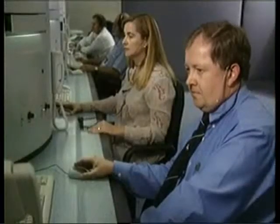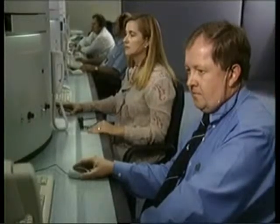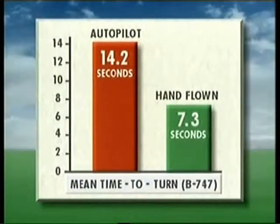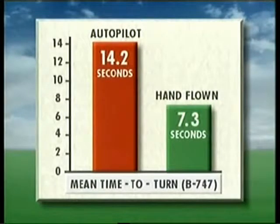We expected questions on several aspects of this new approach. First, why do we have the descending breakout? Extended simulation has shown that there are times when the controller has only one tool left — hence the inclusion of the descending breakout. Second, why hand fly the breakout? Simulation has shown that hand flying is the fastest way to start the aircraft turning, and that turn is the most important element of flying a successful breakout.